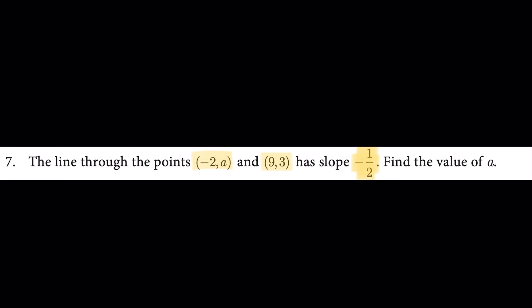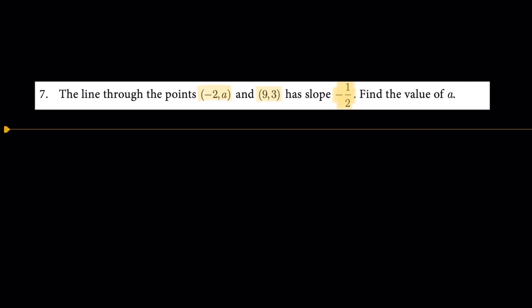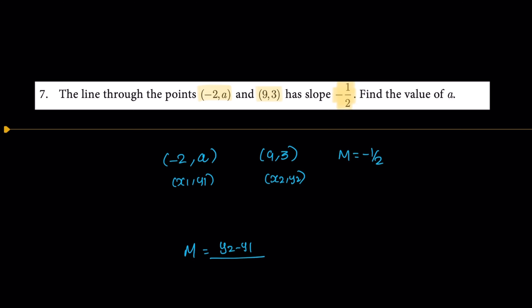The points are given as (minus 2, A) and (9, 3). So x1, y1, x2, y2 are identified. The slope formula is: m equals y2 minus y1 divided by x2 minus x1. The slope is given as minus 1 by 2.